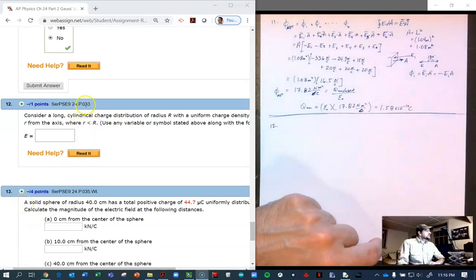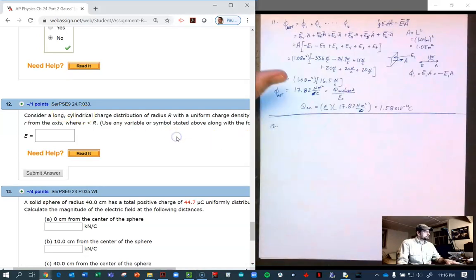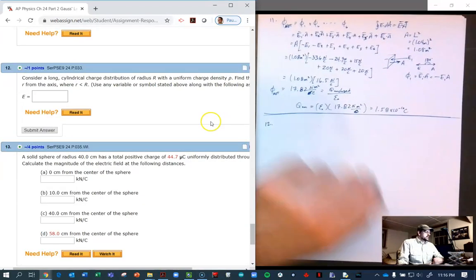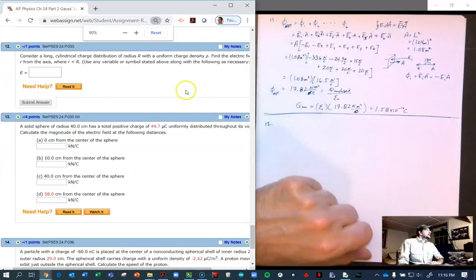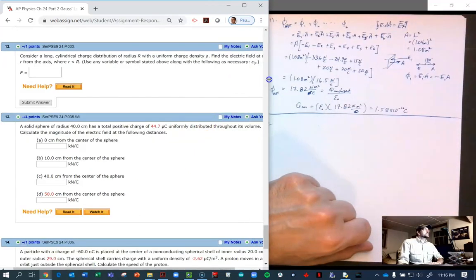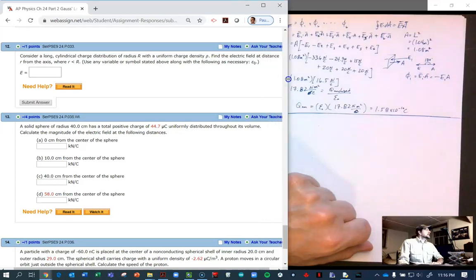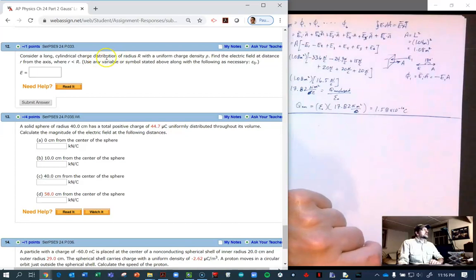Here we're going to talk about number 12 for my students, this is problem 33 in chapter 24 of Serway and Jewett ninth edition Physics for Scientists and Engineers. We have a long cylinder of charge with a big radius R and uniform charge density. Find the electric field at a distance from the axis where we are inside the uniform charge density.